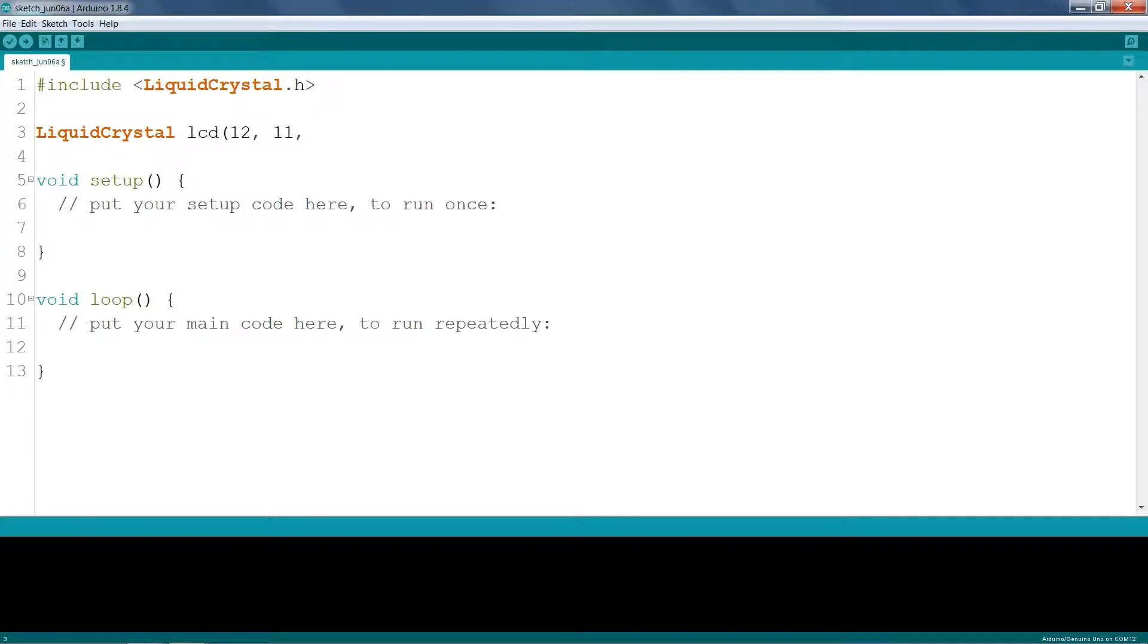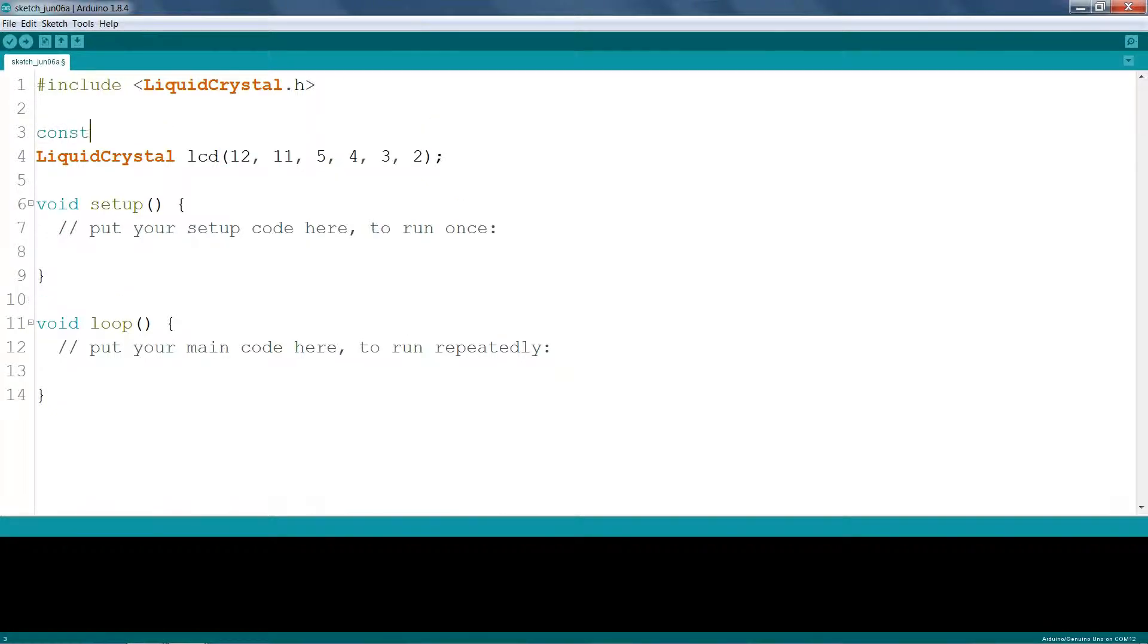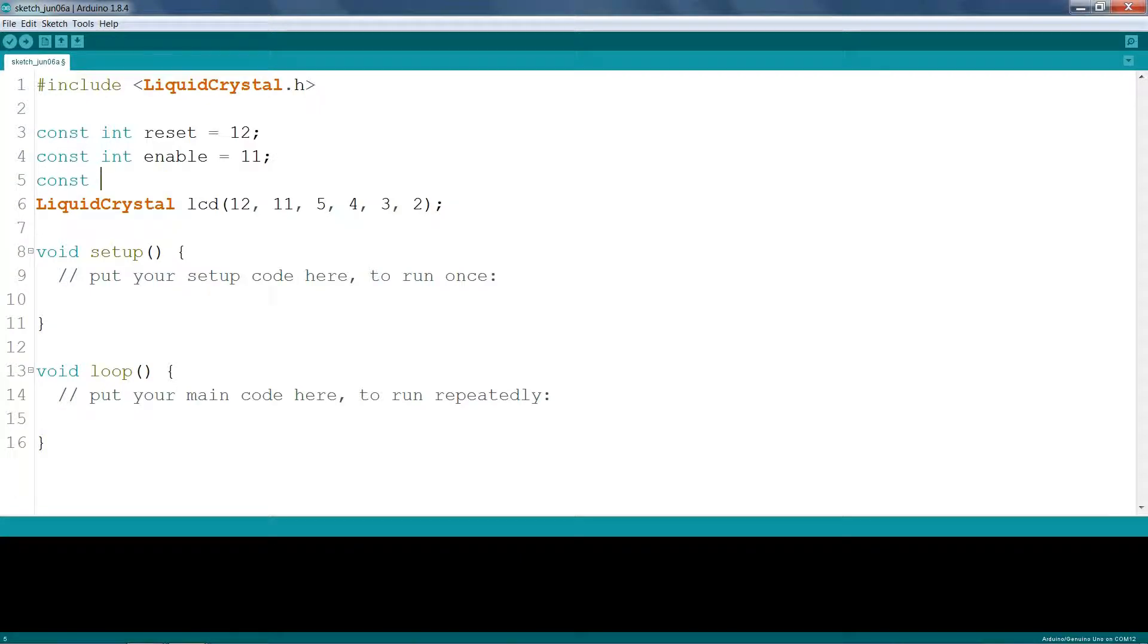Then write the number of the Arduino pin which is connected to enable of the LCD. Then pin numbers connected to data pins 4, then 5, then 6, and then 7. Or for future reference we can define the pins as constants.